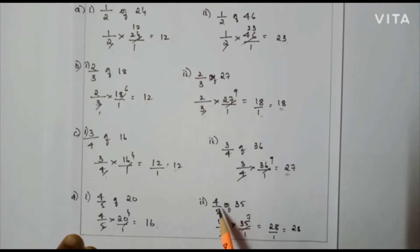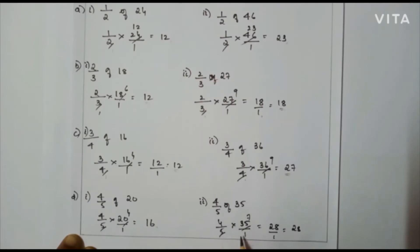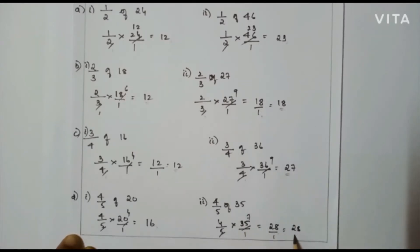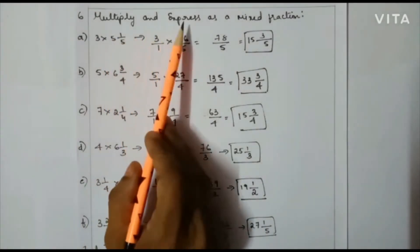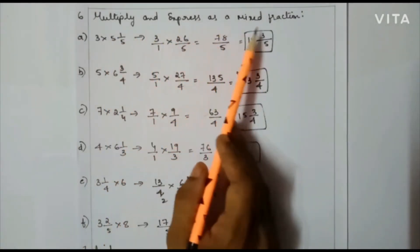Next case: 4/5 of 35, that is 4/5 × 35/1. Here I can cancel: 5 divides 35 giving 1 and 7. So my answer will be 4 × 7 = 28 by 1, that is 28 is my final answer. Now let me multiply and express as a mixed fraction.